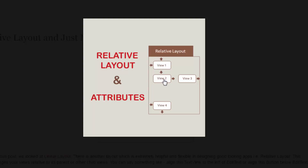In case of view 2, view 2 is relatively placed downward of view 1, which is another child view of this container. In case of view 3, it is relatively placed according to view 2 as well as the parent — its right edge is relative to the right edge of the container, and it is appearing to the right of view 2. That's how views are placed relatively inside a container.